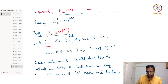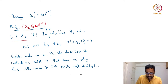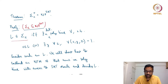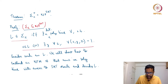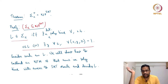Let L be in Sigma_2. This means there is a deterministic polynomial-time verifier V such that whenever X is in L, there exists a string Y such that for all Z (of polynomial length), the verifier V(X, Y, Z) evaluates to 1. This is the definition of Sigma_2.